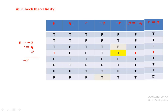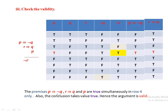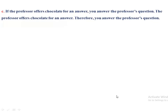Based on this truth table, the argument is valid or invalid by checking all rows where all premises are true. Only in row 4 are all premises — P implies negation Q, R implies Q, and P — all true simultaneously. The corresponding conclusion, negation R, is also true in row 4. Therefore the argument is valid.